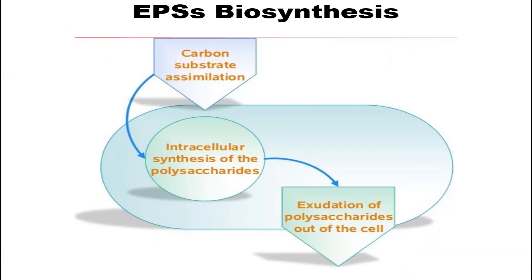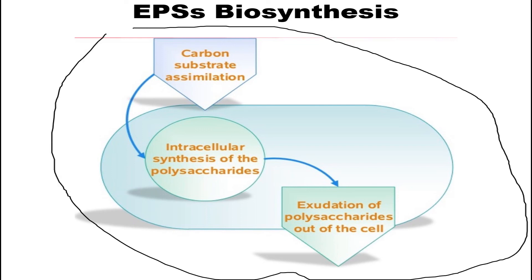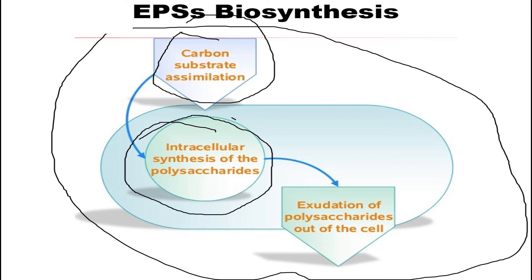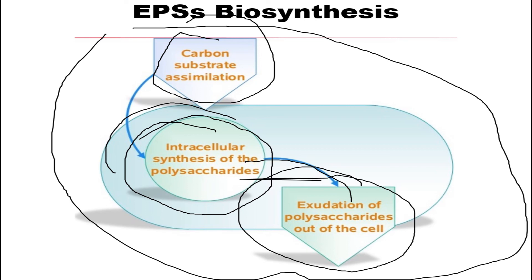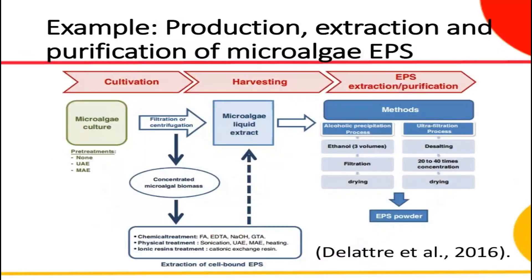This simple table or diagram summarizes EPS biosynthesis: carbon substrate assimilation occurs, intracellular synthesis of polysaccharides takes place, and these are then exuded out of the cell. More species examples are shown — you can pause the video to review them. That concludes this video; please give it a thumbs up if you enjoyed it, and thanks for watching — another video is coming soon.